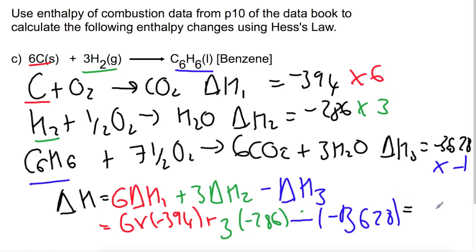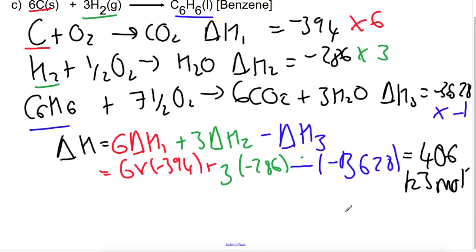Calculating that out gives you a total value of 406 kJ/mol. Thank you for watching this video on Hess's Law. I hope that you find it helpful. Please remember to subscribe or follow me on Twitter at MissAdamsChem for regular updates on new videos.